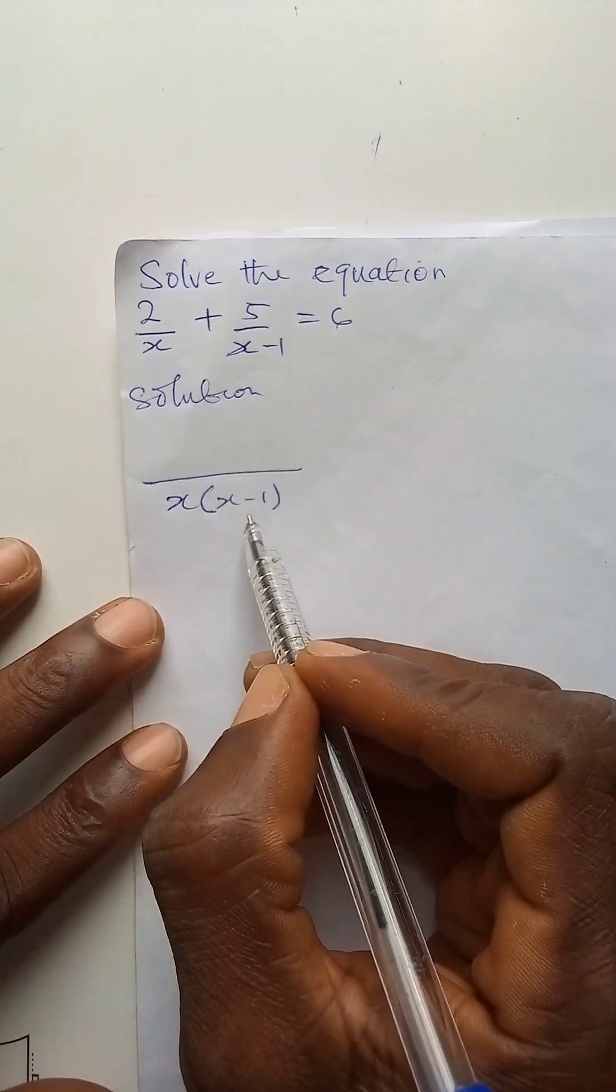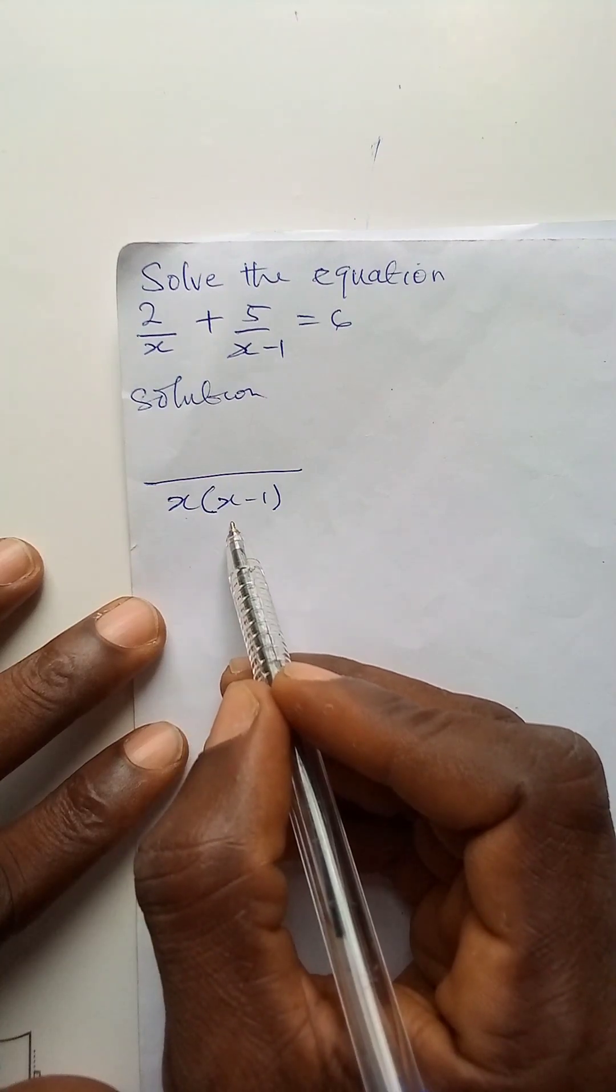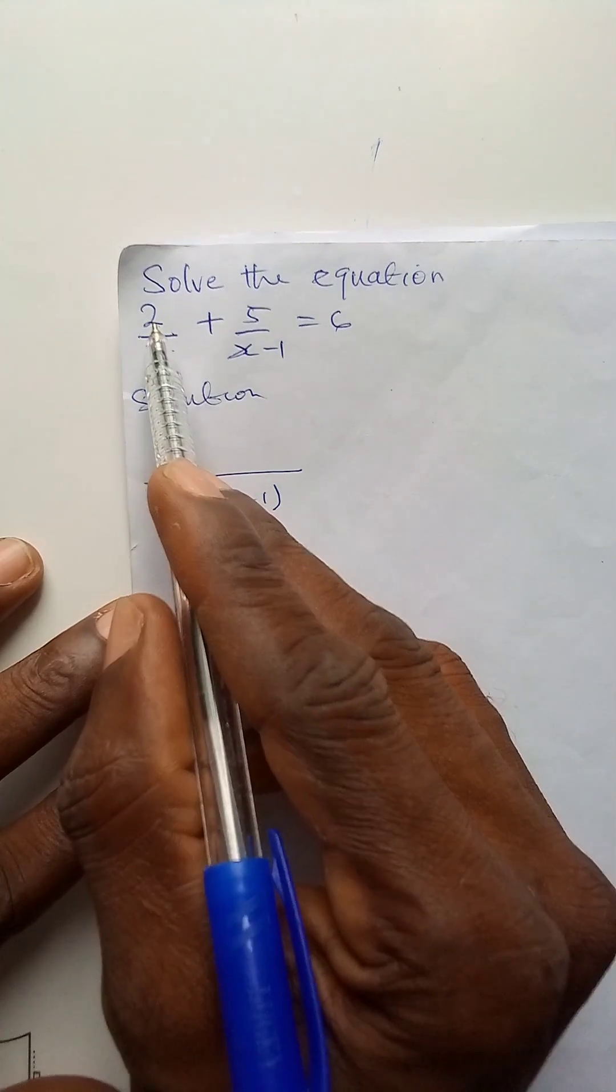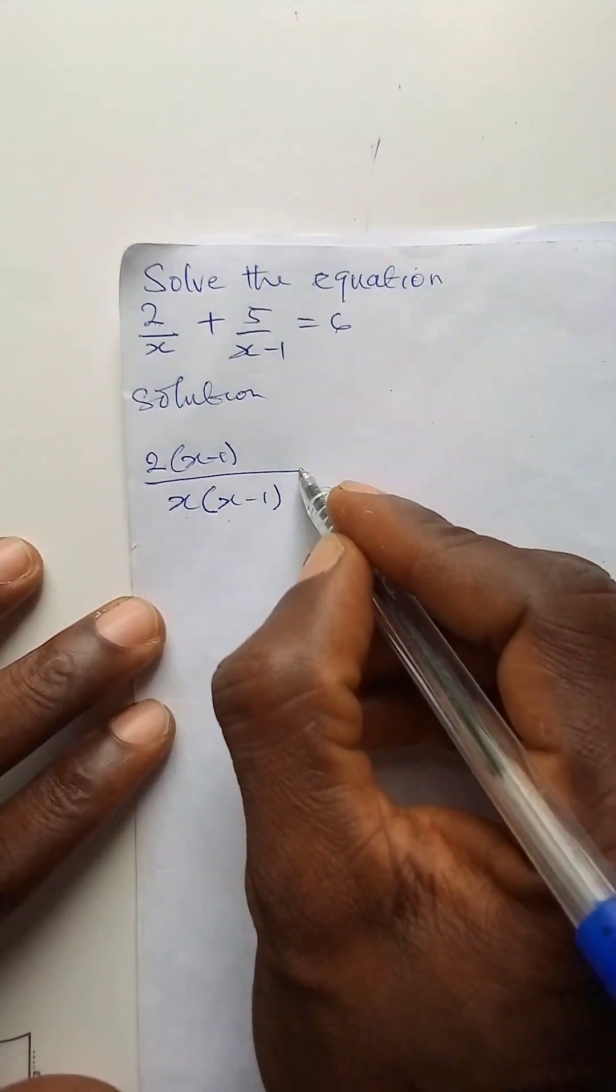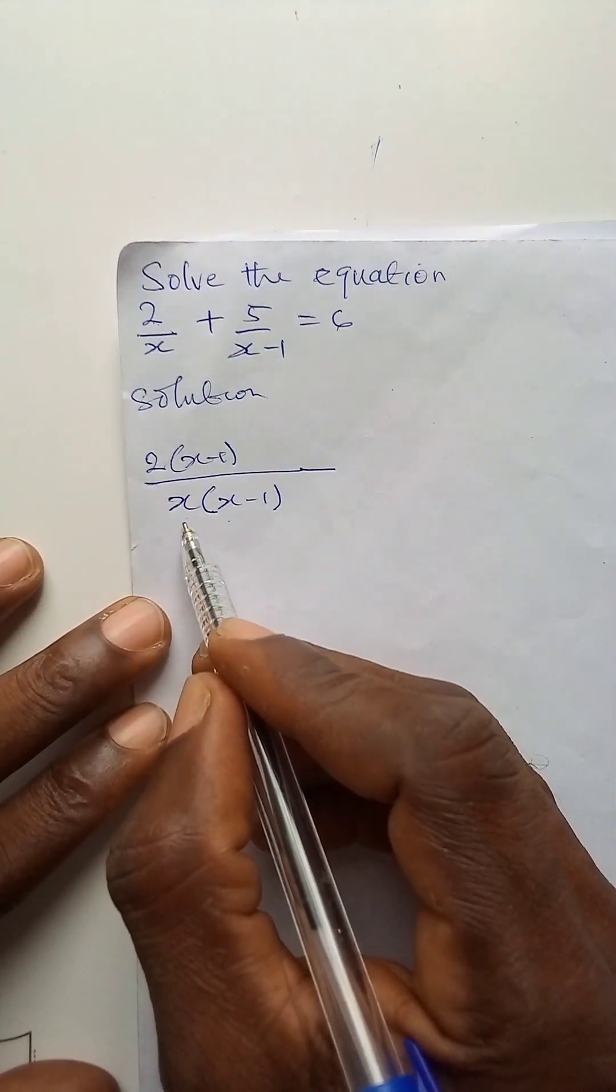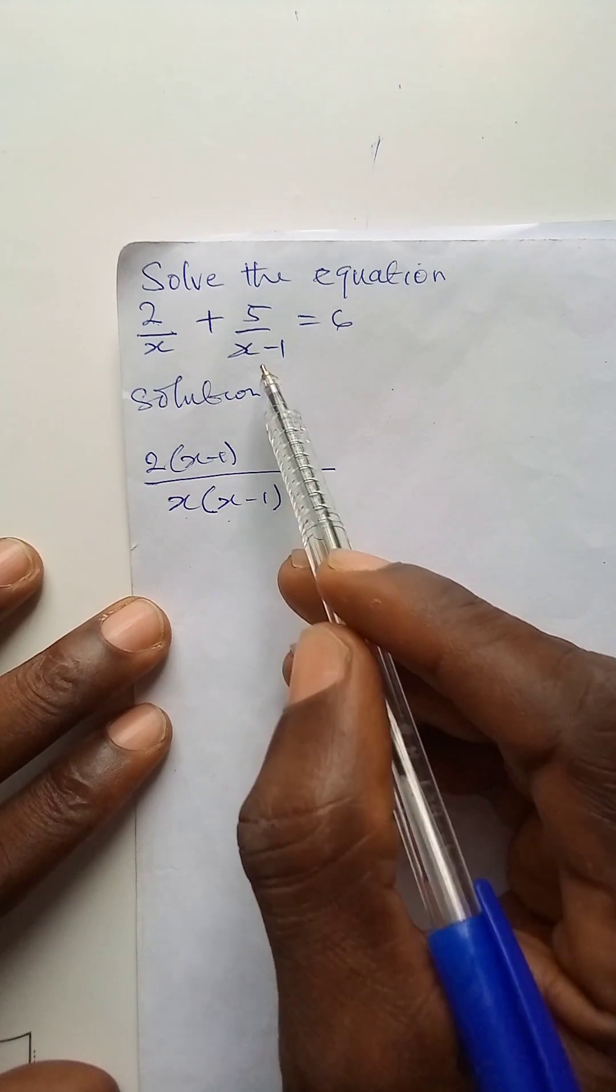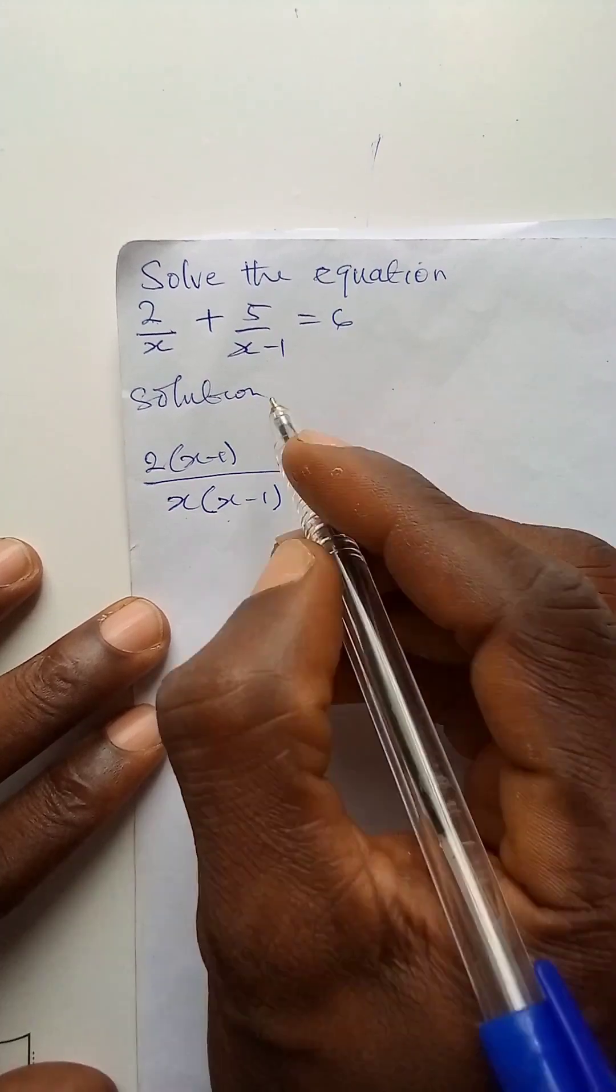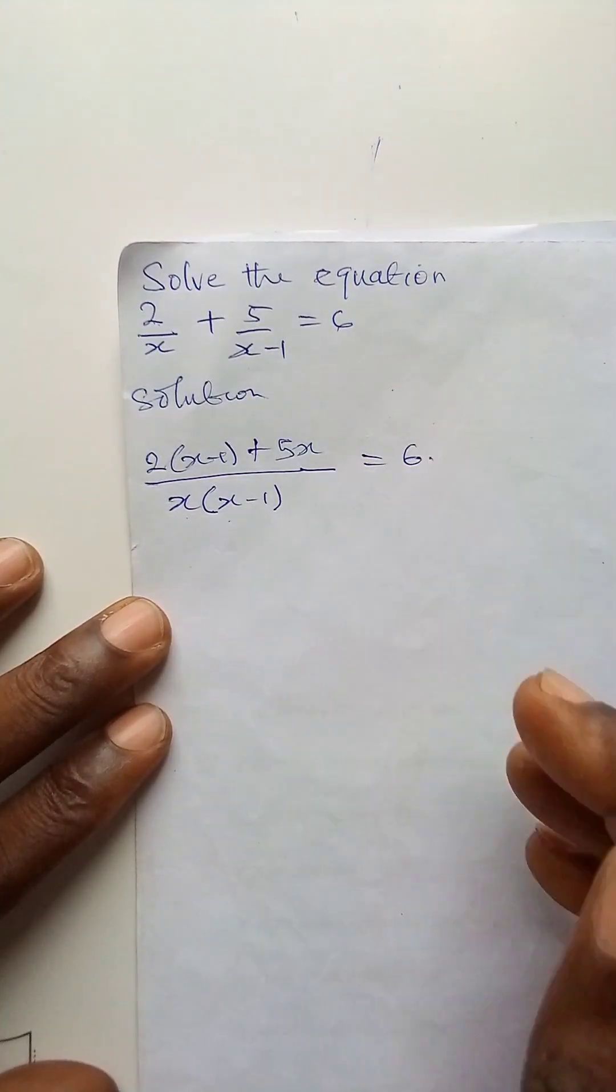Now, x times x minus 1 divided by x will give us x minus 1. x minus 1 times 2 will give us 2 bracket x minus 1. Also, x bracket x minus 1 divided by x minus 1 will give us x. 5 times x will give us 5x is equal to 6.